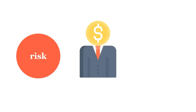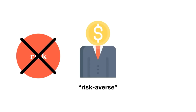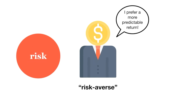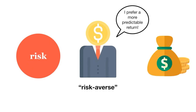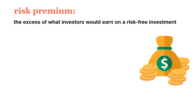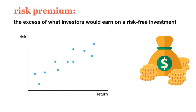Investors don't like risk. Most people are risk-averse, meaning that they'll prefer an asset with a more predictable return over one with greater variability. So to incentivize investors to take on riskier investments, these investments must earn an extra return. That is, investors can earn a risk premium in excess of what they would earn on a risk-free investment. In general, the higher the risk, the greater the return you can expect to earn on an investment.